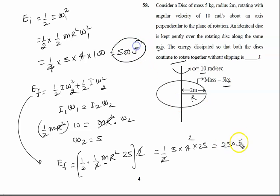So initial energy 500, final energy 250 joules. So energy dissipated is 250 joules. The right answer is 250 joules.